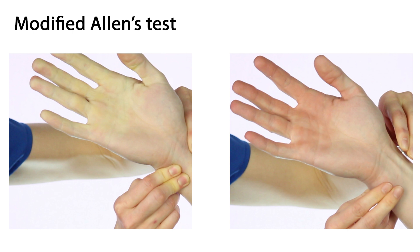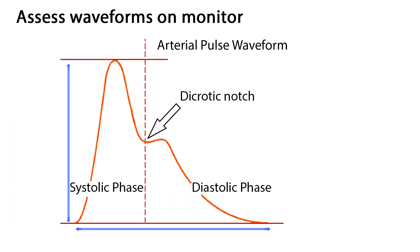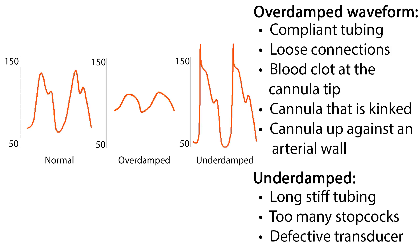When monitoring a patient with an arterial line, the monitor will show waveforms in red. The systolic phase is when the heart contracts; the dicrotic notch reflects the closure of the aortic valve; and the diastolic phase is the pressure going down in diastole.